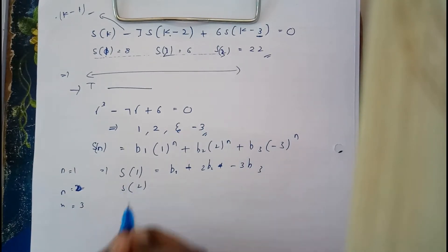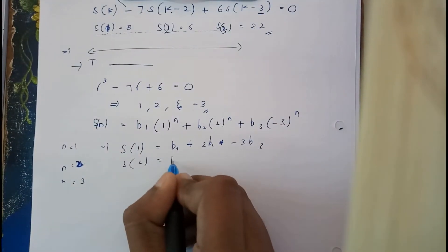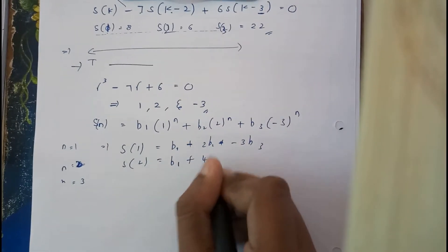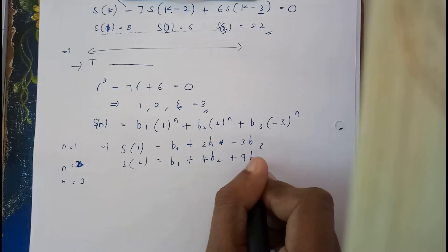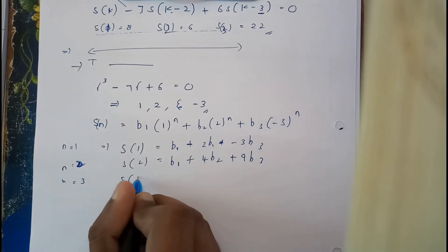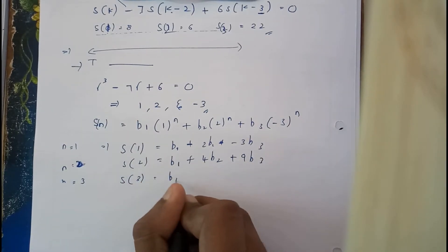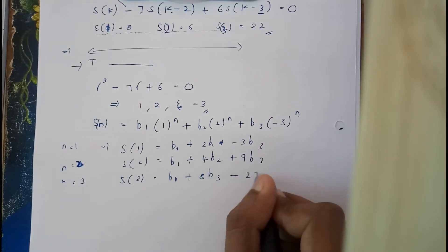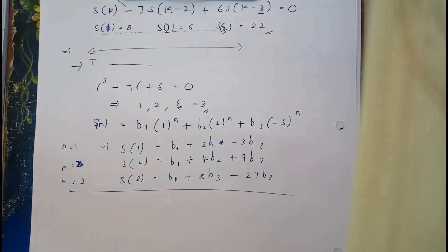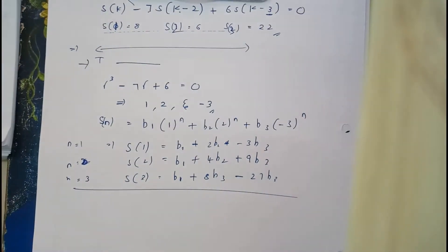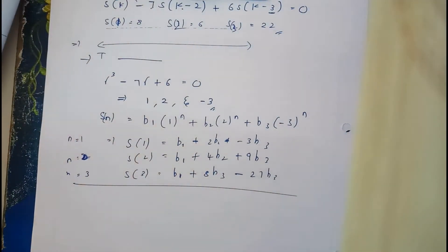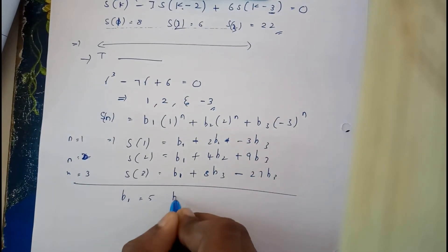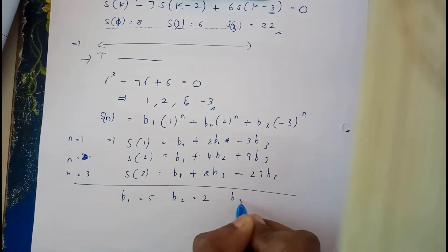For s(2): 1-squared is 1, so we get b1 + 4·b2 + 9·b3. For s(3): b1 + 8·b2 − 27·b3. Solving these three equations using a calculator, I got b1 = 5, b2 = 2, and b3 = 1. Please recheck for any mistakes, and if you find any, comment below.